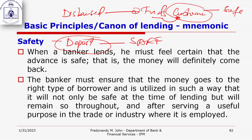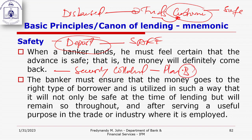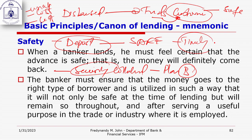That is the reason we sometimes ask for security — collateral for the loan. This is Plan B: if the borrower fails to repay, we can realize our funds by selling the credit security. However, this can damage the bank's reputation, is costly, and the outcome is uncertain. It would be much better to have timely repayment. Please ensure bank funds are safe out there.